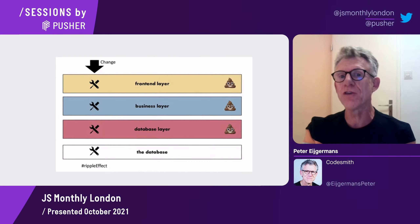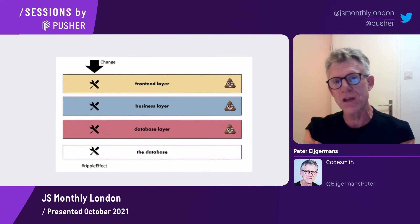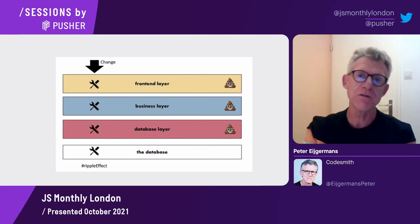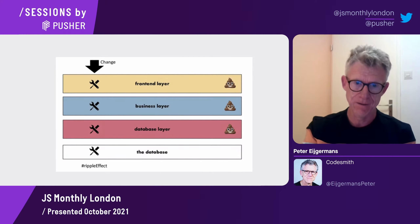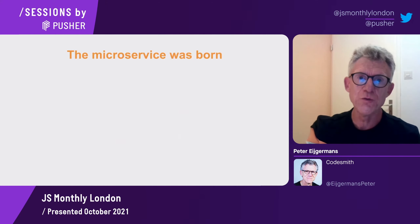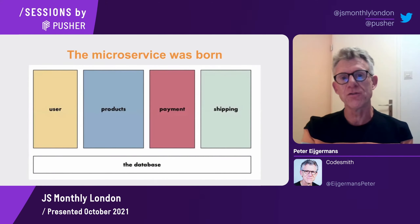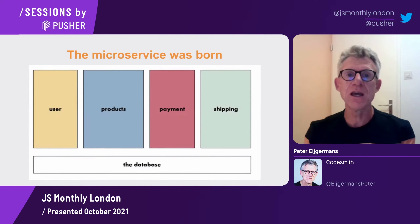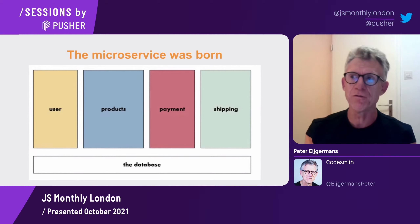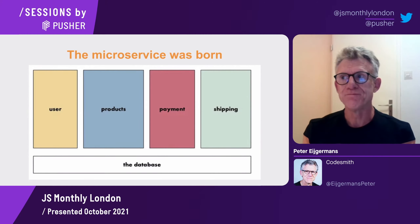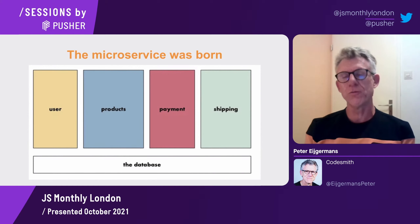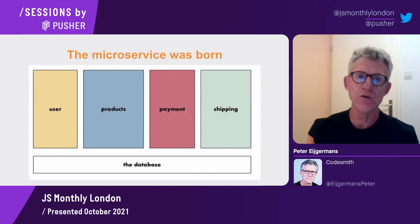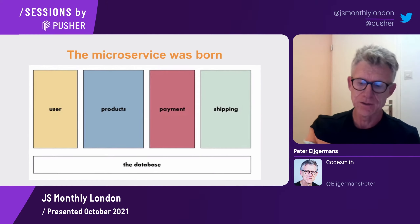Let's start with the monolith. The monolith is — they say — it is a ball of mud, so the frontend and the backend are tightly coupled, tightly linked together. You have one database, and it is not ideal, so we stepped over to layers. We split up our application into a frontend layer, a business layer, and a database layer.